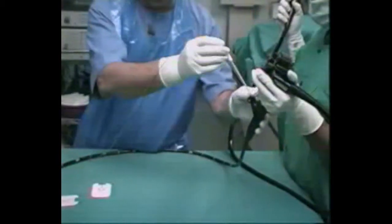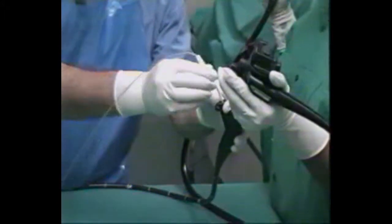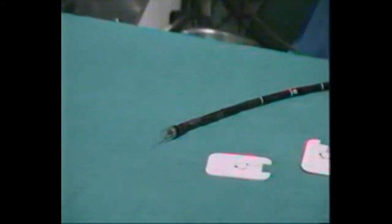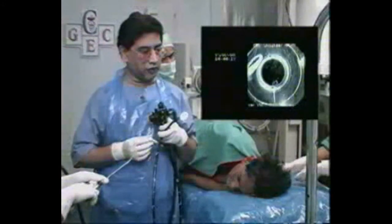The plastic sheet is passed into the working channel of the endoscope, through which the metal cannula is pushed till it comes out of the tip of the endoscope.